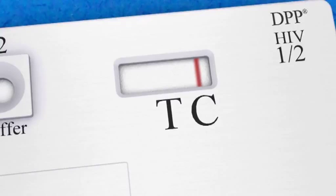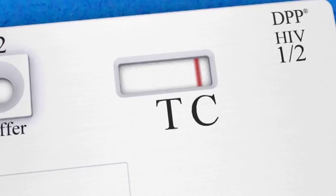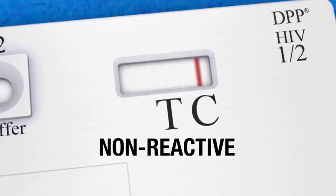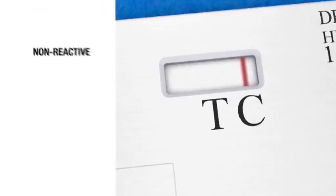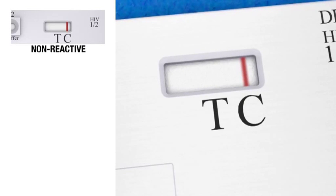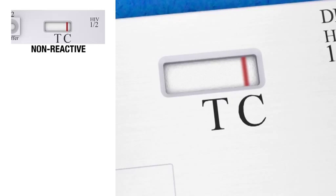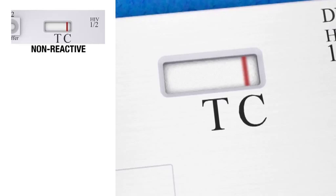If no line has formed above the T marking in the test window, the result is non-reactive, meaning that the patient is preliminarily negative for HIV-1 and or HIV-2 antibodies. Be aware that this does not necessarily exclude HIV infection.